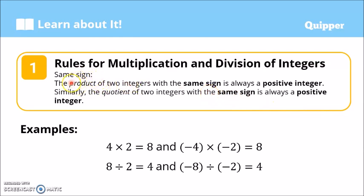So when we say product, let's review. When we multiply integers, the answer is called the product. When we divide two integers, the answer is called the quotient. So the product of two integers with the same sign is a positive integer. The quotient of two integers with the same sign is also positive.